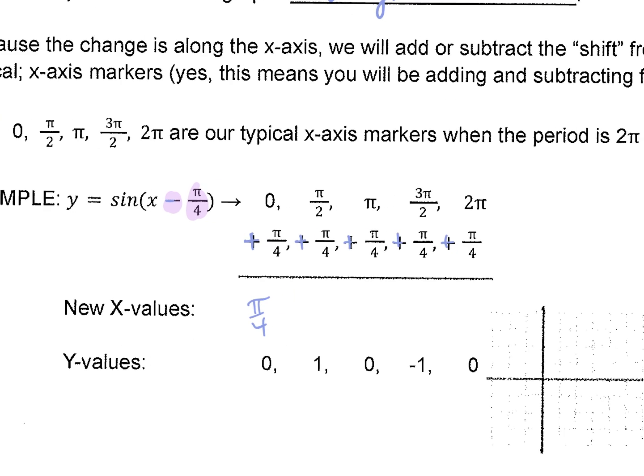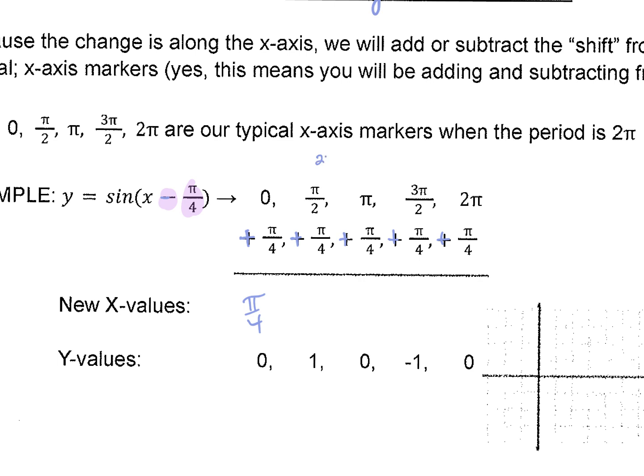But here, this pi over 2 plus pi over 4, let's think of this as 2 pi over 4 plus 1 pi over 4, so we get 3 pi over 4. And then let's think of pi as 4 pi over 4 plus 1 pi over 4, so we get 5 pi over 4.